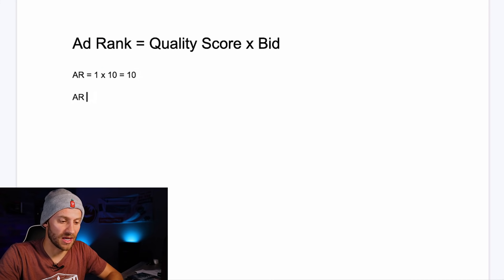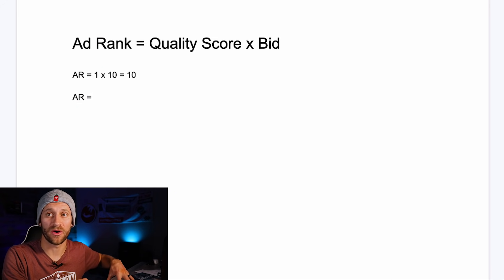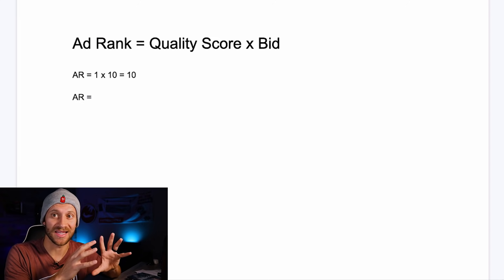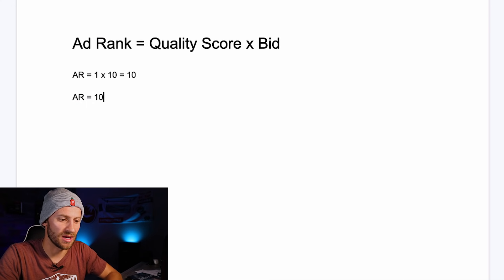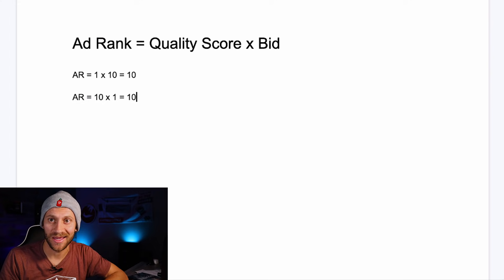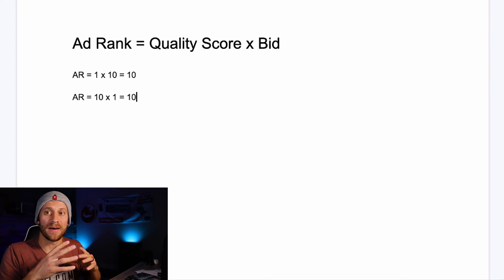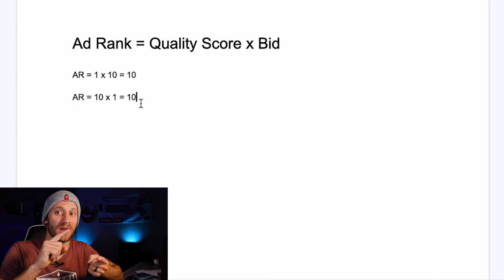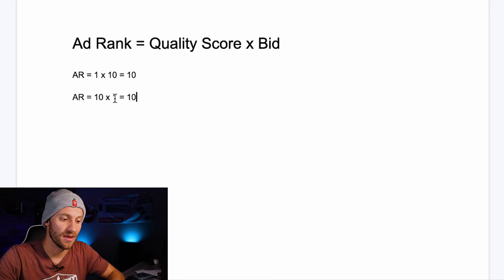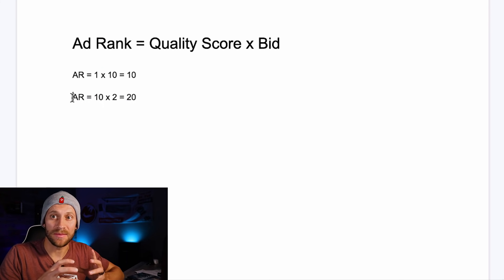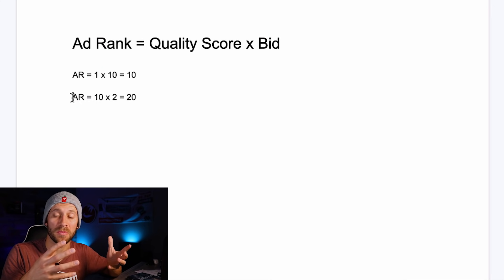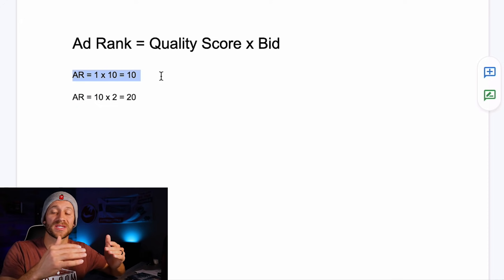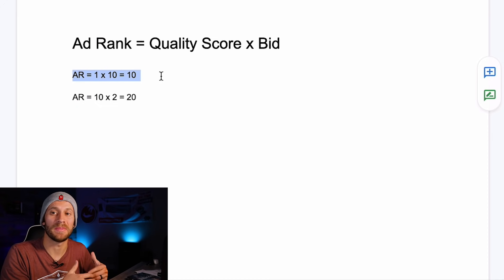Now let's take a different advertiser. This advertiser makes a perfect ad. Someone searches for online course platforms, they make an ad comparing three online course platforms, the landing page is all about it, the ad itself says exactly that. They get a quality score of 10. That means they can bid $1 and have the exact same ad rank as the person bidding $10. If they bid $2, their ad rank is 20, making them the top spot. So the second person is paying $10 per click in second place while the first pays only $2 and ranks higher — all because of a relevant ad.